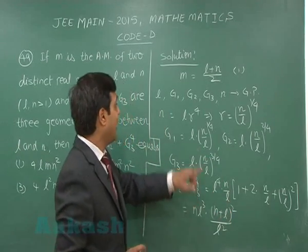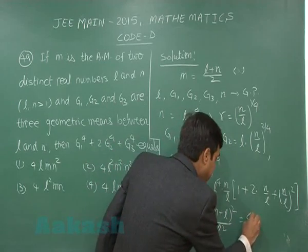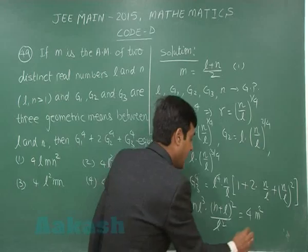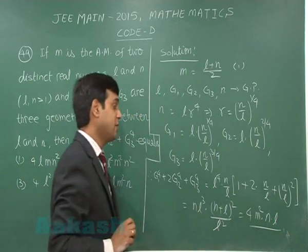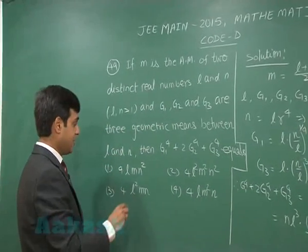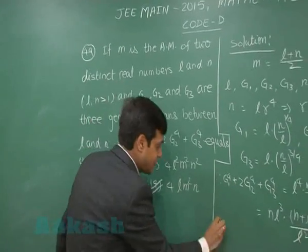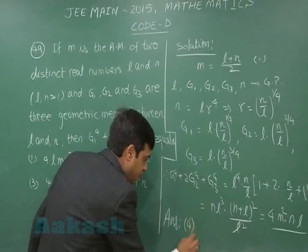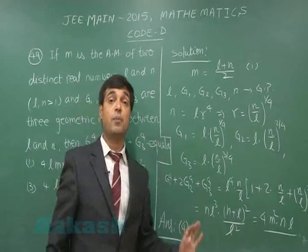The L² cancels, leaving NL·(N+L)². Since N+L = 2M, this becomes NL·4M², so the result is 4M²NL. The correct answer is option 4. This is how we solve this question from sequences and series.